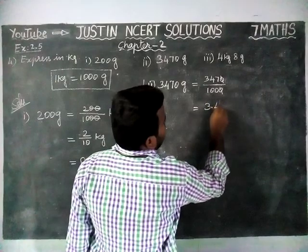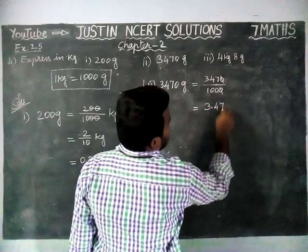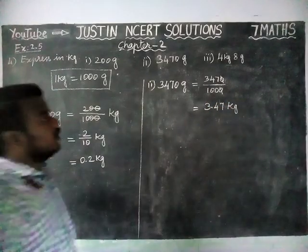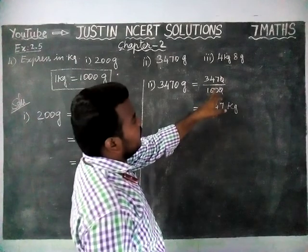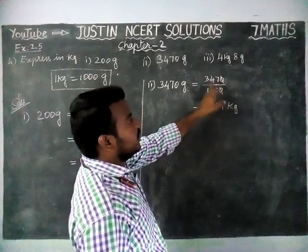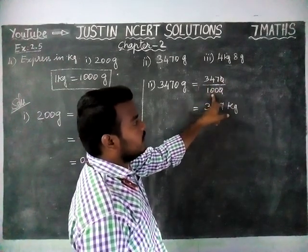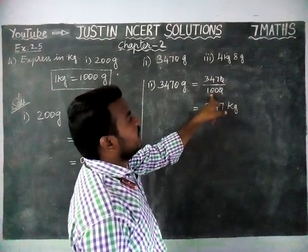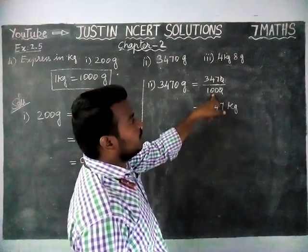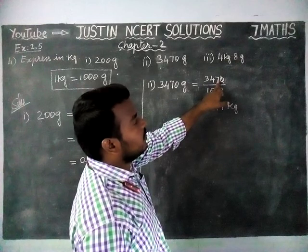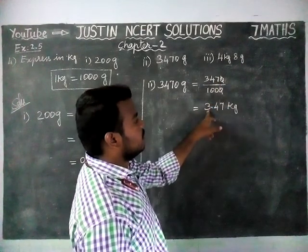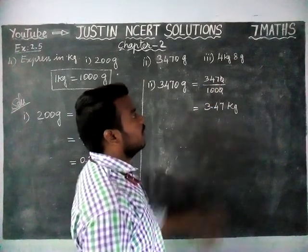So 3.47 kilograms. We cancelled the 10, and remaining 347 divided by 100. In the denominator we have 2 zeros, so we are going to make 2 decimal points from the right hand side: 1, 2 — 2 decimal points — 3.47 kilograms.